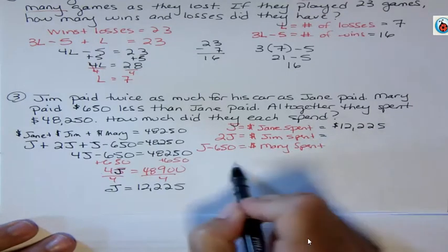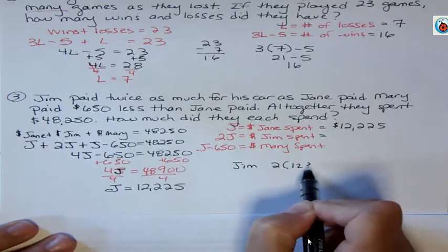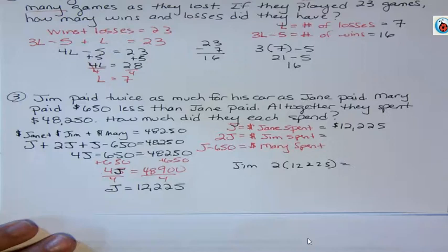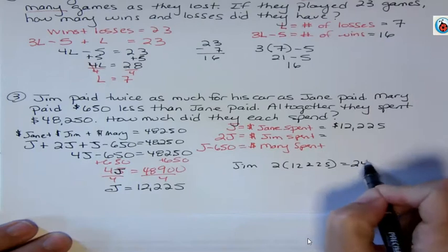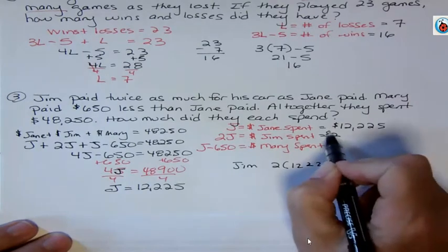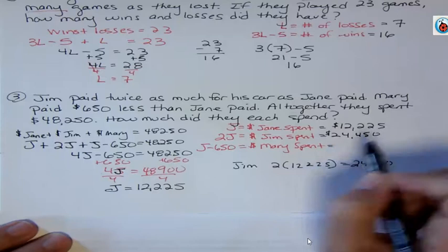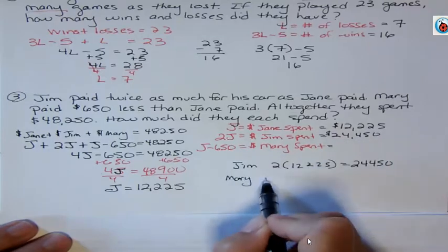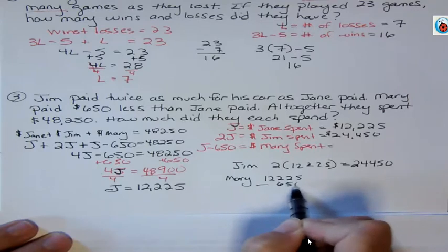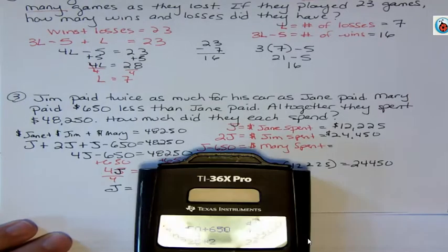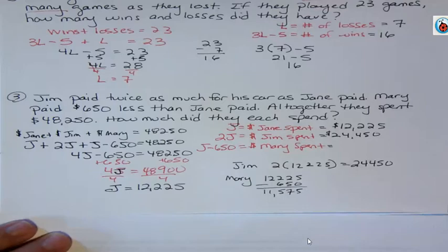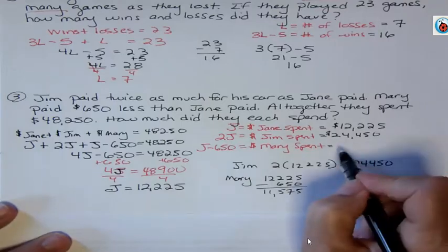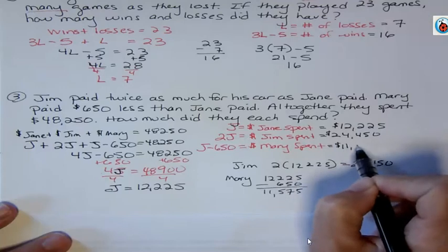What did Jim spend? Well, Jim spent 2 times that. So I'm going to do 2 times 12,225, and that's 24,450. What did Mary spend? Well, Mary spent 12,225 minus $650. She spent less. And that's 11,575. Use your calculator or use your own brain skills, but just make sure you're getting those calculations. Use your calculator, rely on that.